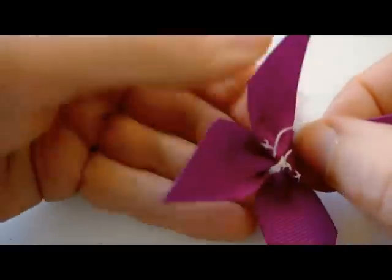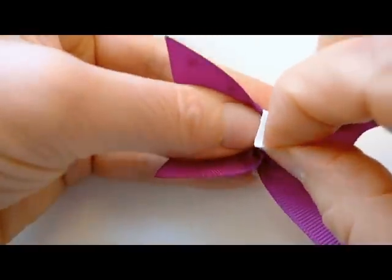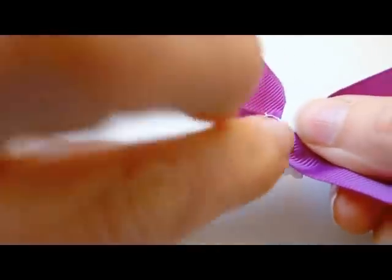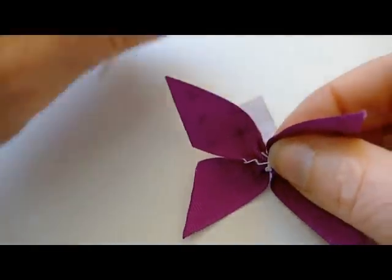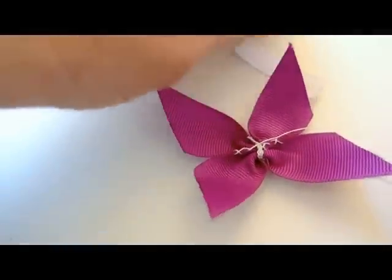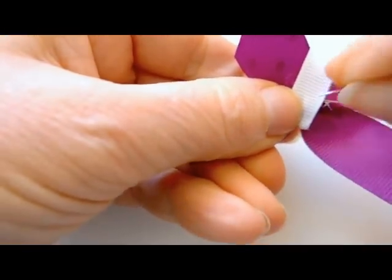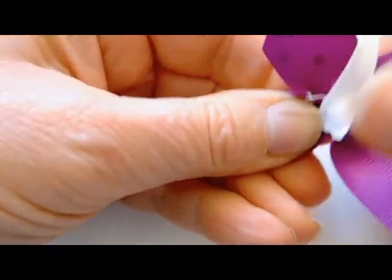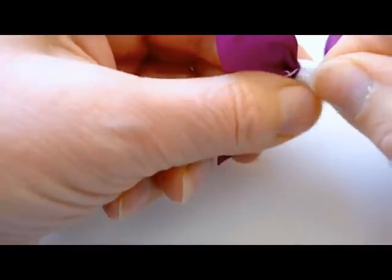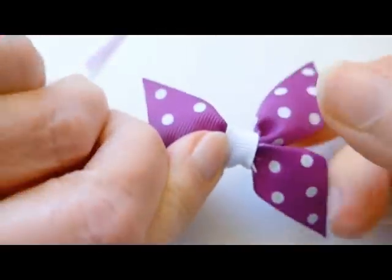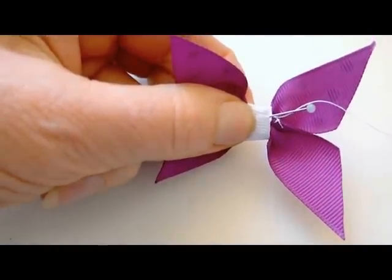Now then, take your 9mm grosgrain. Put it there. Bring it round the front. Sometimes, if you've got a pin, it helps. Pin that there, come round and pin it there. So we've got that at the front. And then just put two stitches in there.